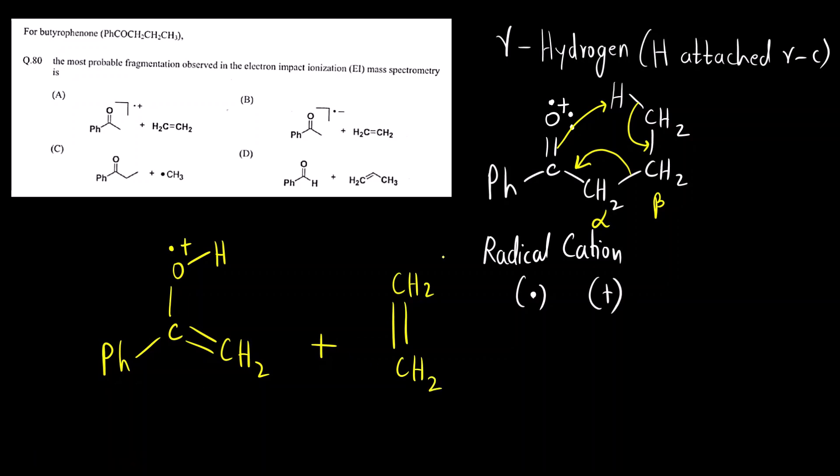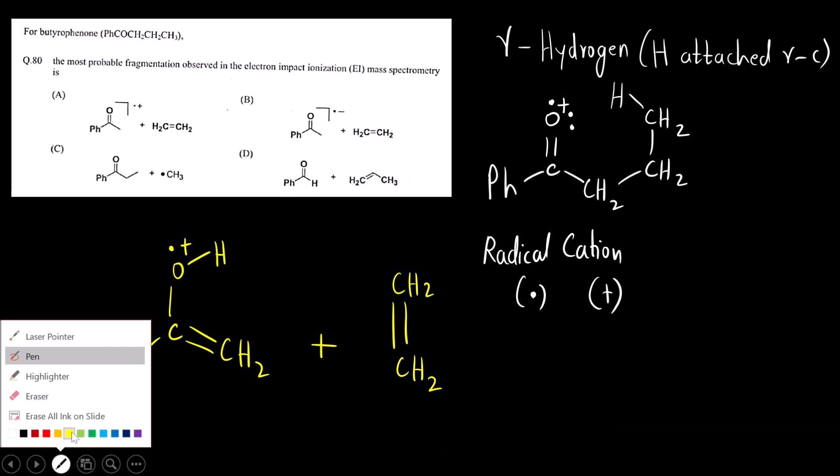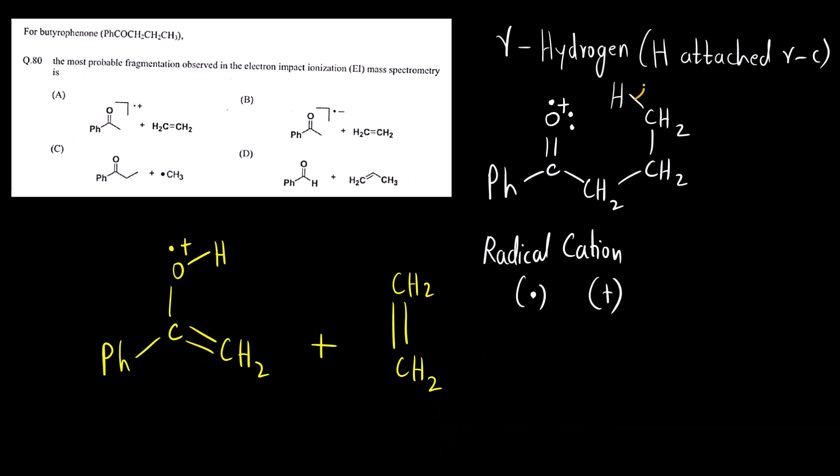This is the product that is formed. Another method also I will show you. Another mechanism what we had seen was radical mechanism. How does radical mechanism take place? This will break homolytically. Bond between alpha and beta will also break homolytically, and a new bond is formed between oxygen and hydrogen.